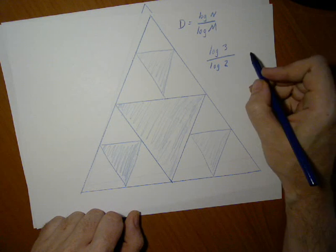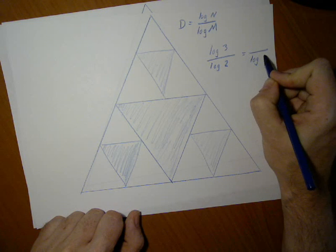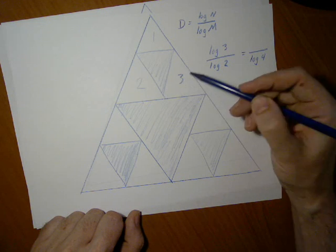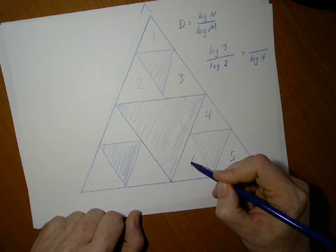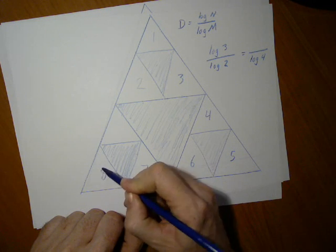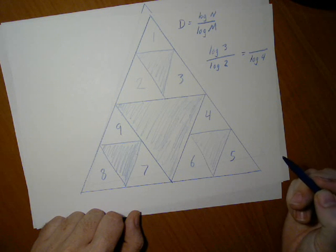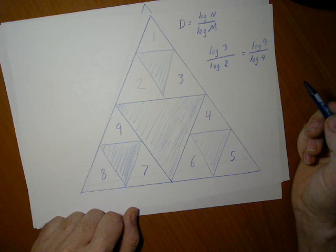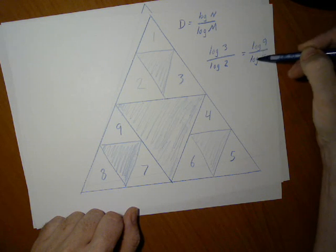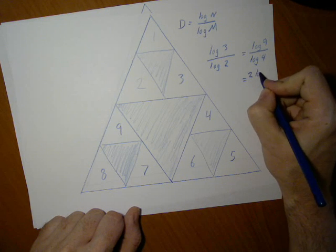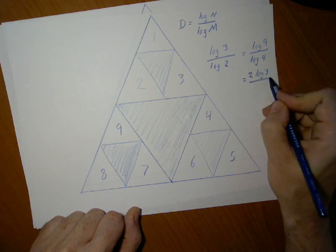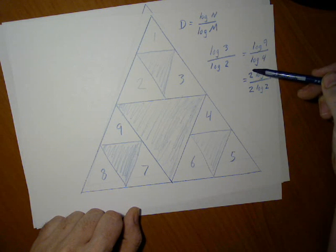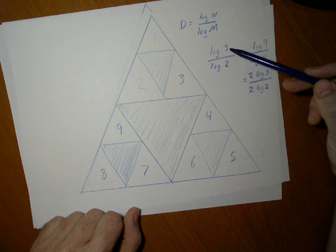Now if we go to a magnification factor of 4, we can count the number of triangles: 1, 2, 3, 4, 5, 6, 7, 8, 9 — nine triangles. We can write log 9 over log 4. If you remember your properties of logarithms, we can write log 9 over log 4 as 2 log 3 over 2 log 2. Of course the 2 over 2 cancels, and we are left with log 3 over log 2.